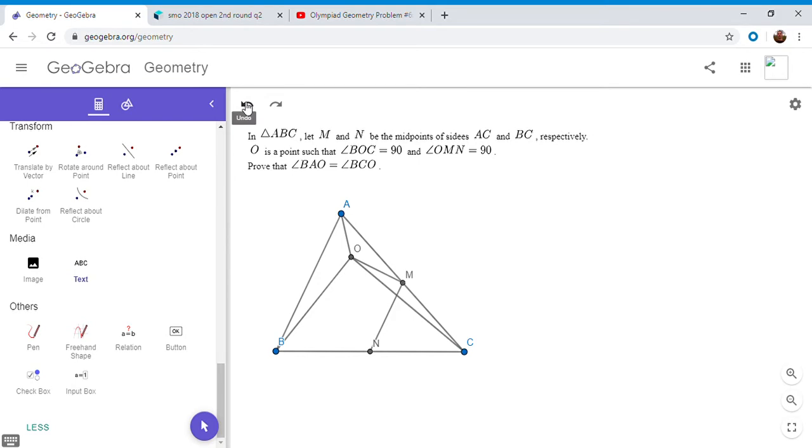So we want to show that angle BAO equals angle BCO, but they both subtend a side of the same length. So I mention in many videos that if two equal angles subtend a side of the same length, then they have to have the same size circumcircle.